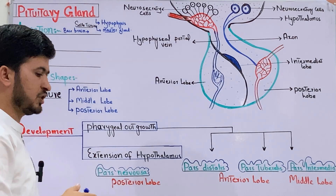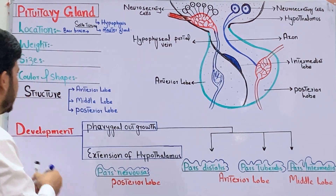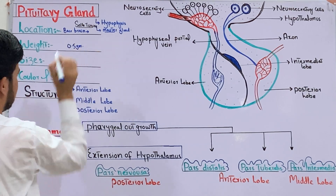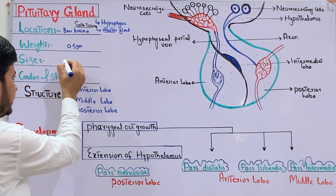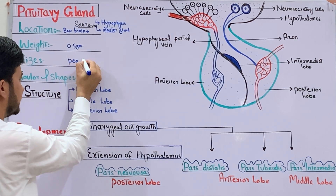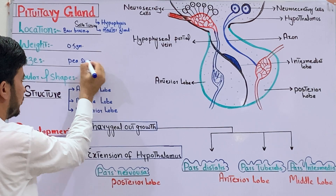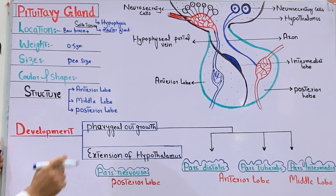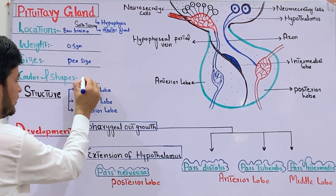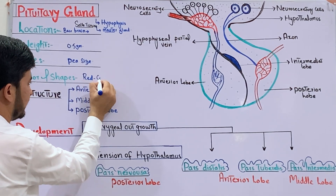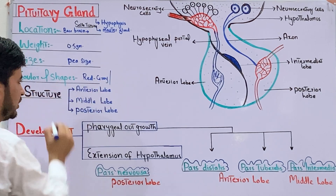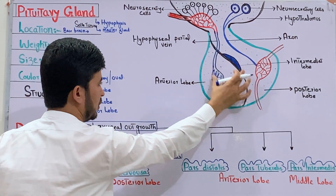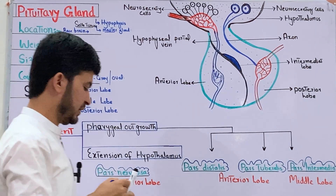The weight of the pituitary gland is 0.5 grams. Its size is approximately the size of a pea. The color is red and gray.